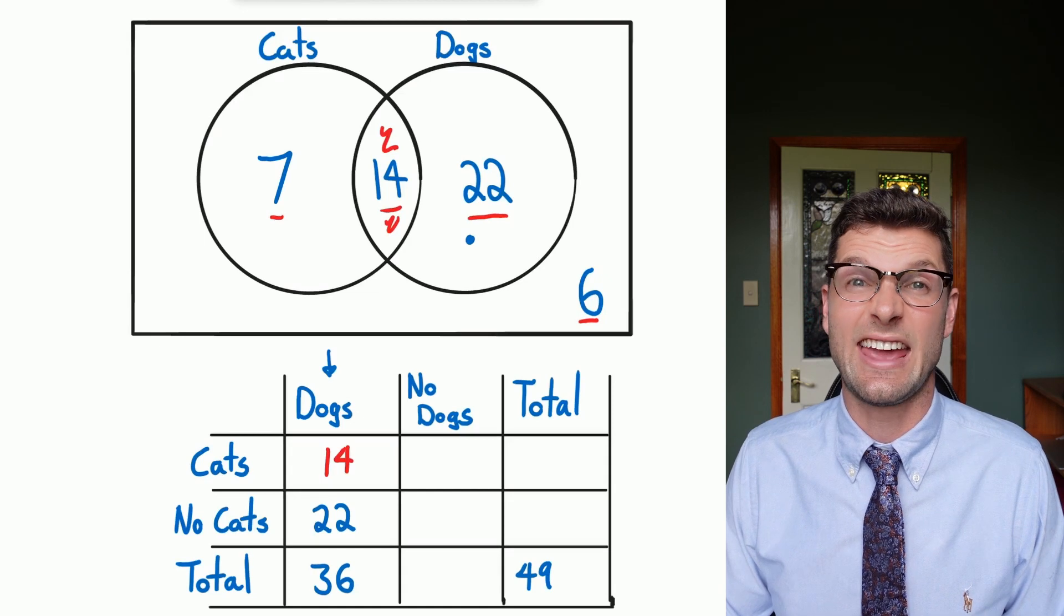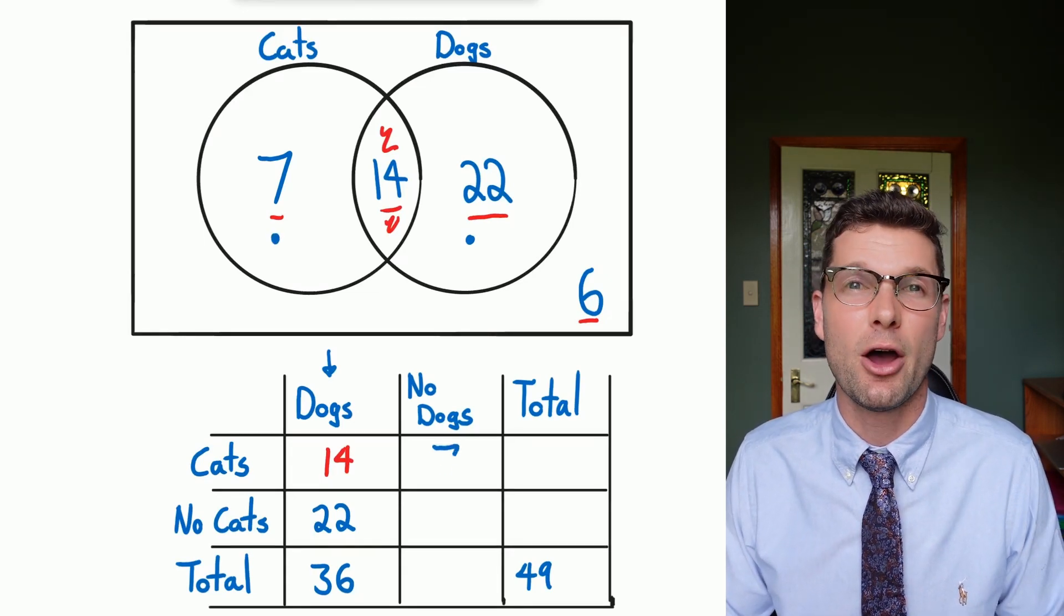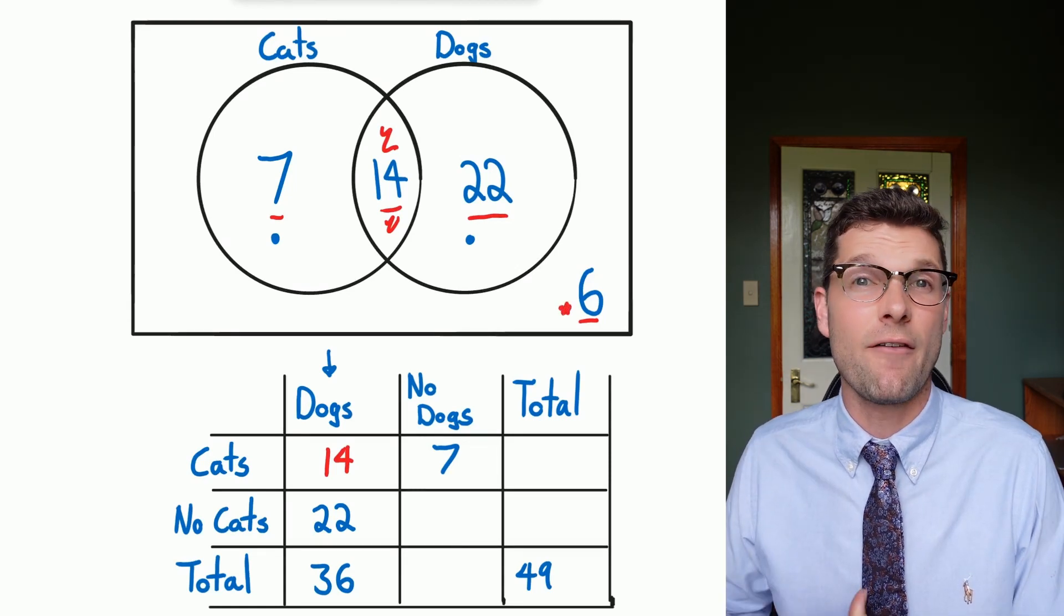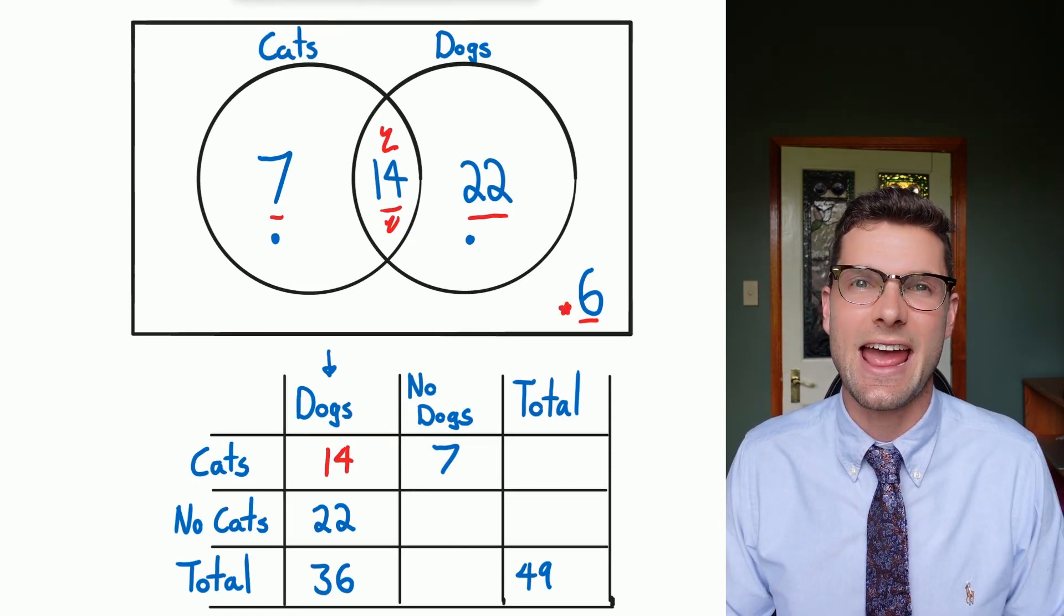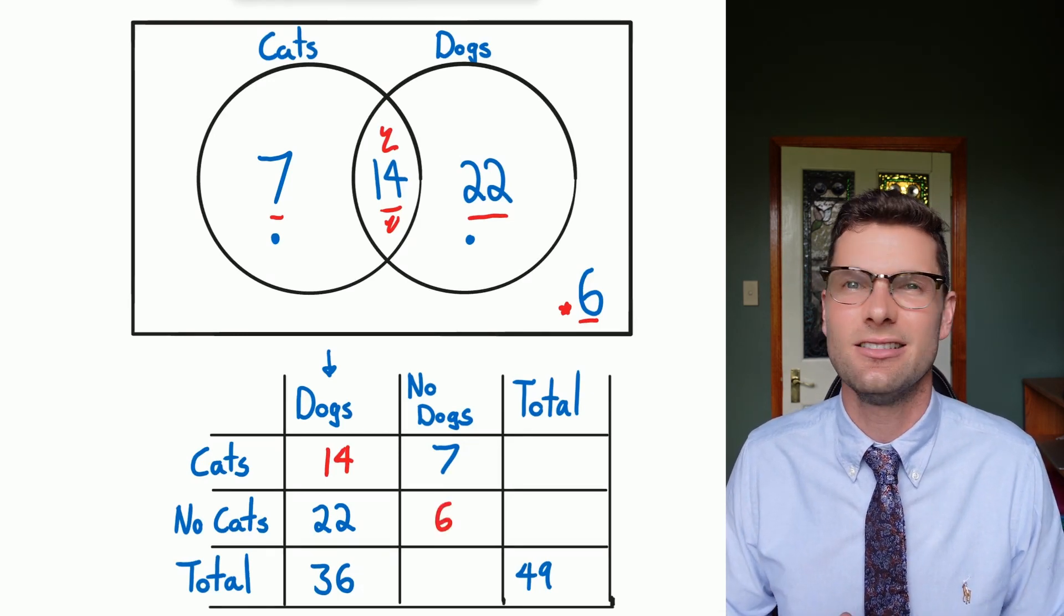From here I've just got to do the cats. Seven people only have a cat, 14 people have both, so that means that seven goes here straight away. And then I've got six people that don't fit into either, and those six go into the no cat no dog cell straight away.